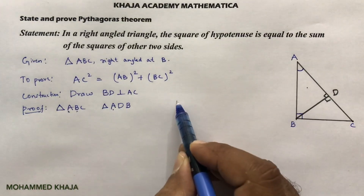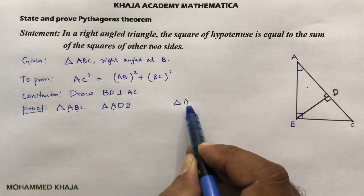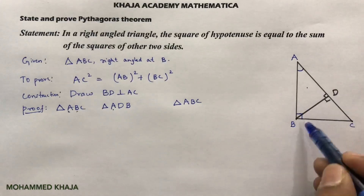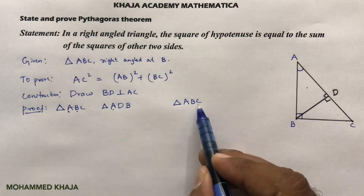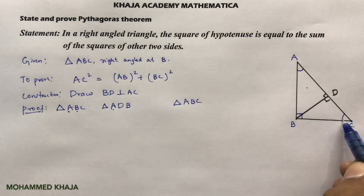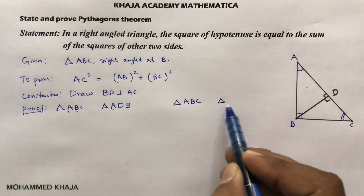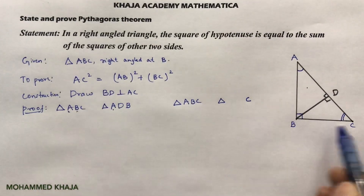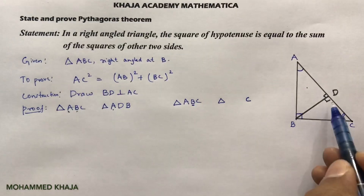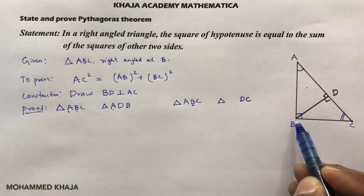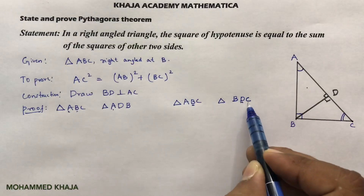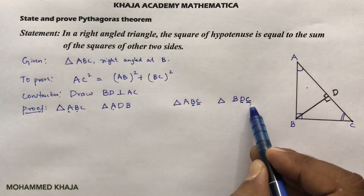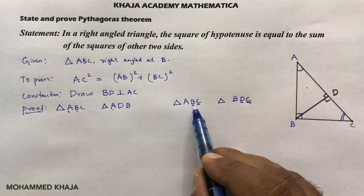For the second pair, write the big triangle as ABC again. For the small triangle BDC, angle C is common and appears at the end in ABC, so it must also be at the end here. The 90° should come in the middle. So the order is: B, D, C — common angle C at the end, 90° at D in the middle.